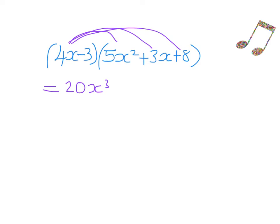Then 4x multiplied by plus 3x — positive times positive gives a positive answer. Writing the plus sign in straight away: 4 times 3 is 12, and x times x is x squared, so 12x squared. Then 4x multiplied by positive 8 — positive times positive, so it's a plus. 4 times 8 is 32, and we're only multiplying by the single x, so 32x.